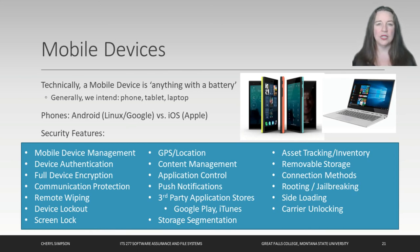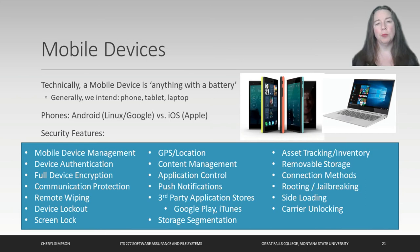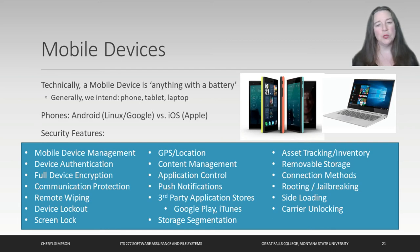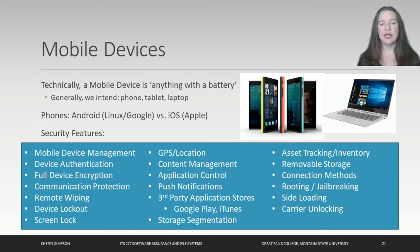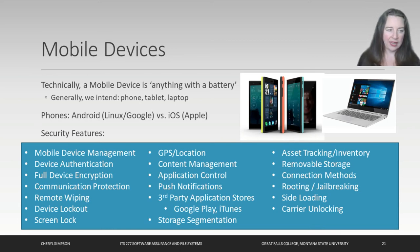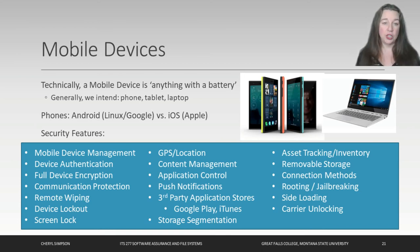Features of mobile device management include controlling content and applications, push notifications, storage segmentation so data is stored only on a flash drive, SIM card, or SD card as chosen, asset tracking, removable storage, rooting and jailbreaking, side loading, and carrier unlocking. Carrier unlocking allows you to buy a device and use it with any carrier — AT&T, Verizon, T-Mobile — switching as you see fit, rather than being locked to a specific carrier.